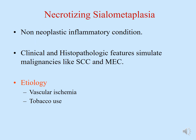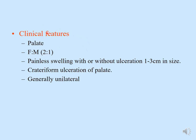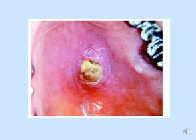Clinical features: necrotizing sialometaplasia presents on the palate with a female-to-male ratio of 2:1, painless swelling with or without ulceration, 1 to 3 centimeters in size. There is a crateriform ulceration of the palate, commonly unilateral. It appears as a central necrotic area with a crater. Given a tobacco use history, clinicians immediately think of squamous cell carcinoma or mucoepidermoid carcinoma — only histopathology performed by an experienced pathologist can differentiate and arrive at a diagnosis of necrotizing sialometaplasia.